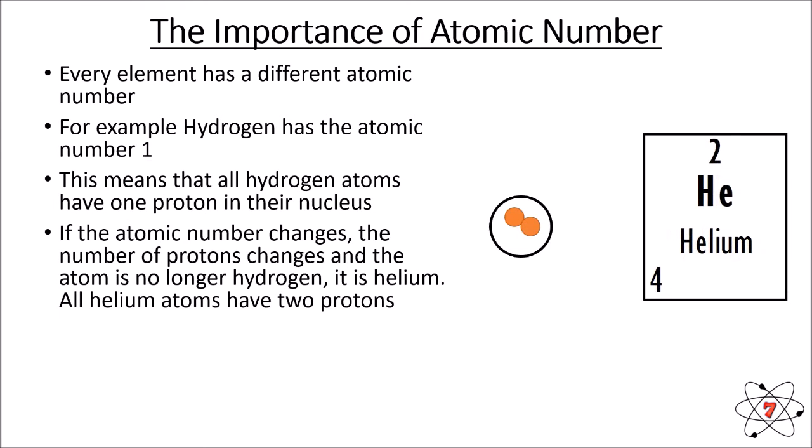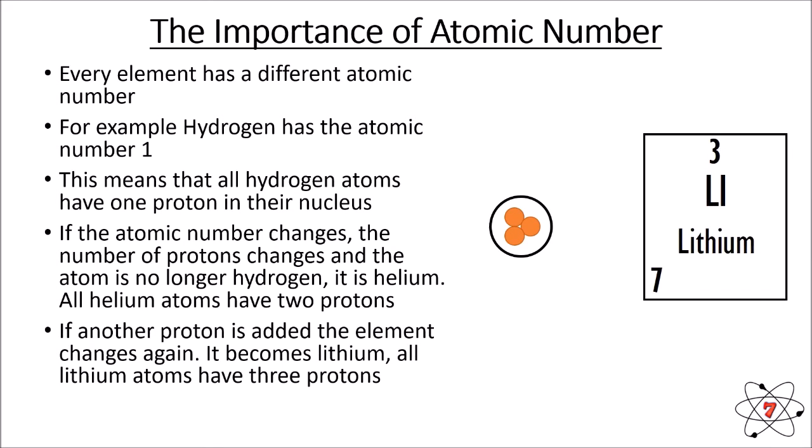Whenever the atomic number changes, the number of protons changes. So if we add an extra proton to hydrogen we have helium — all helium atoms have got two protons. If we add another proton the element changes again and becomes lithium — all lithium atoms have got three protons.